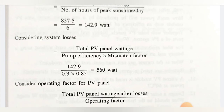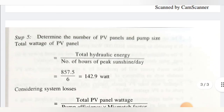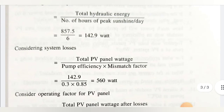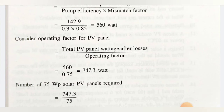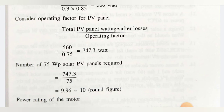Now considering system losses — pump efficiency and mismatch factor. Total PV panel wattage after losses = 142.9 W ÷ (pumping efficiency × mismatch factor) = 142.9 ÷ (0.30 × 0.85) = 560 Watts. Then considering the operating factor for the PV panel: 560 W ÷ 0.75 = 747.3 Watts of solar panels required.